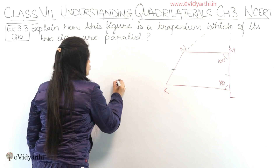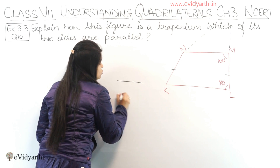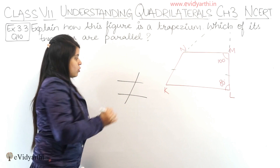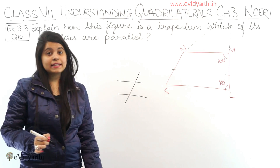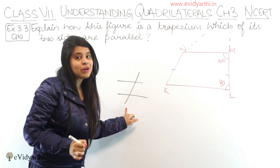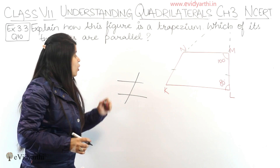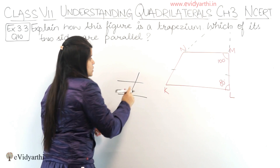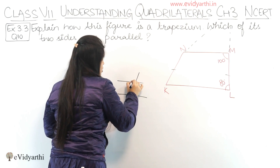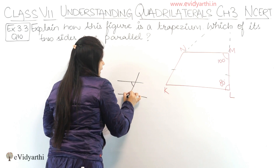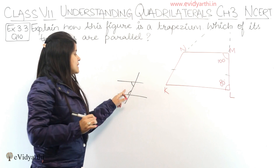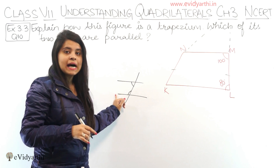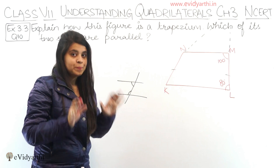So if there are parallel lines and there is a transversal, there is a rule that the co-interior angles measured by the transversal sum up to 180 degrees. So these two lines can be shown to be parallel.